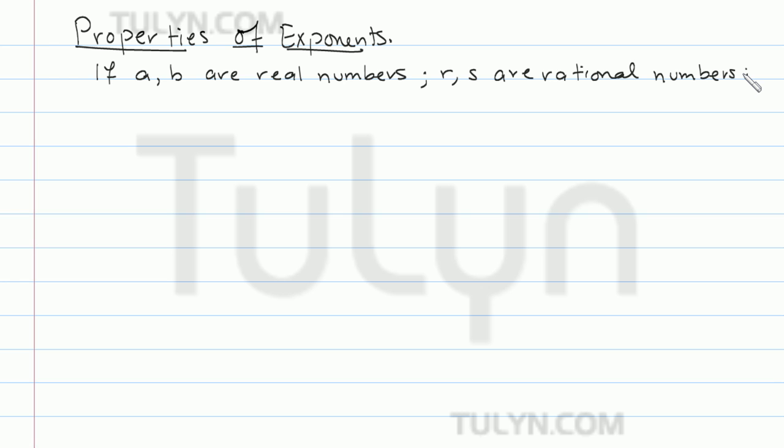We're going to talk about properties of exponents. If you have two values A and B which are real numbers, and R and S which are rational numbers, then there are eight properties of exponents that we can use.